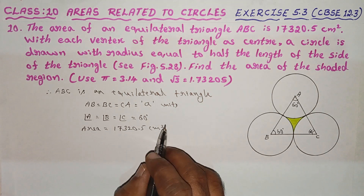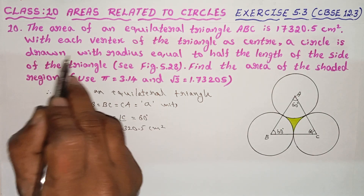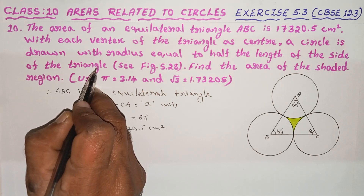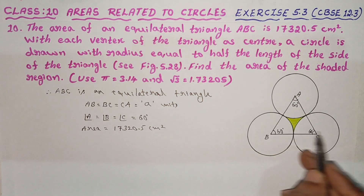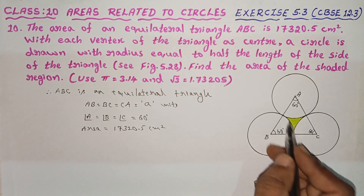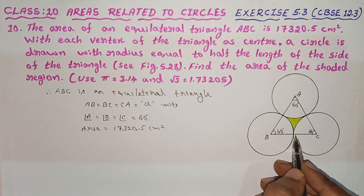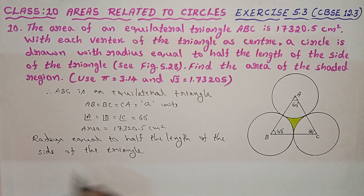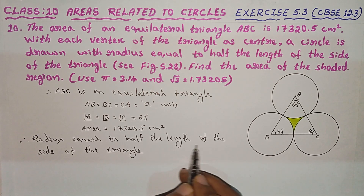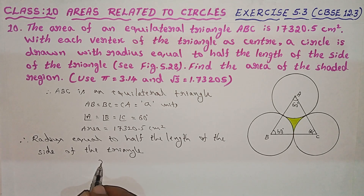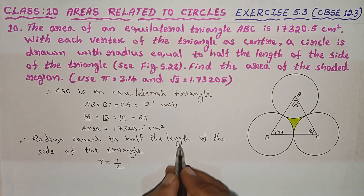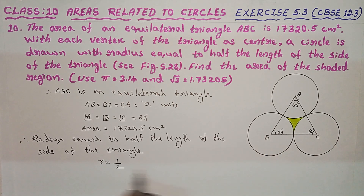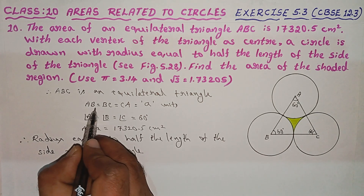The circle is drawn with radius equal to half the length of the side of the triangle. So radius is equal to half of the side of the triangle.